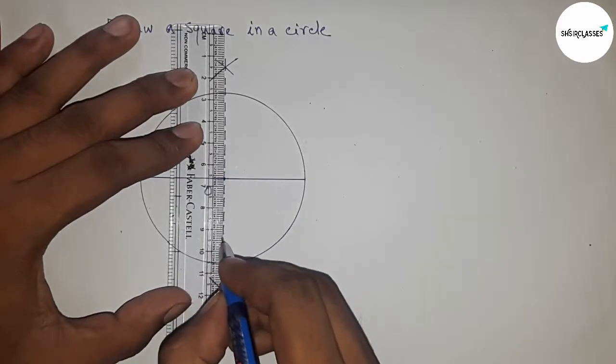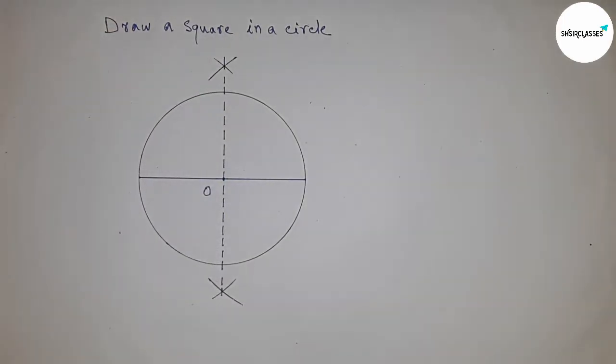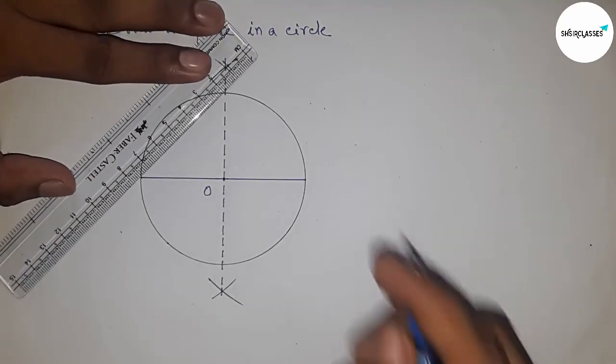This creates a perpendicular diameter which intersects the circle at two points. Now join this side.